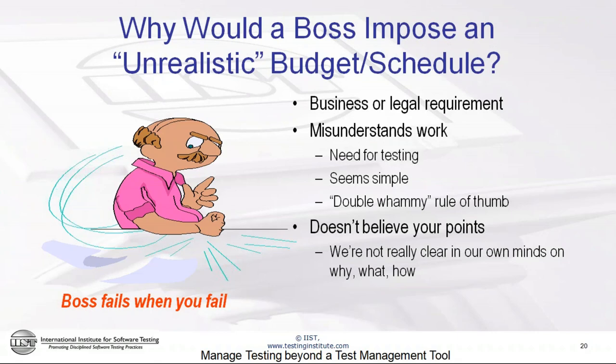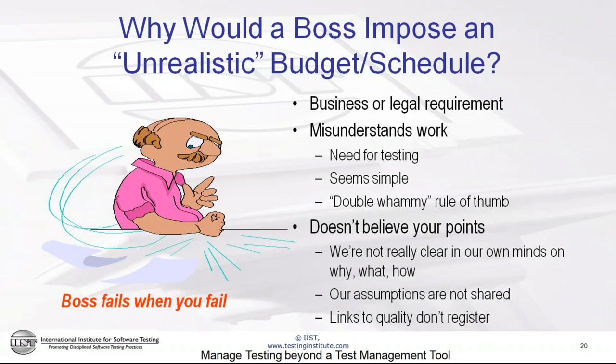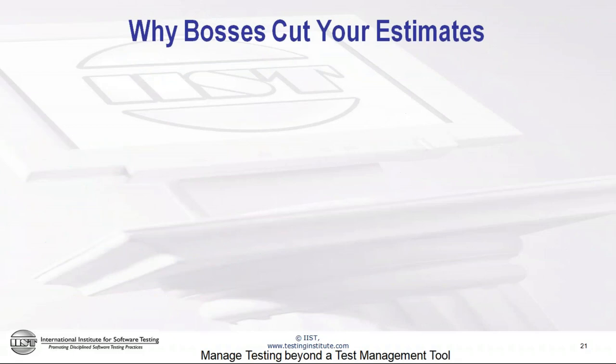If we're just saying things like 'don't you care about quality?' and the boss is not sharing our assumptions, the boss may also say, 'Of course I care about quality, and what you're saying doesn't seem to have anything to do with quality.' We think we're talking about quality and the boss doesn't. In a way we're saying, 'Boss, if you don't do what we tell you, it means you don't care about quality' — and bosses don't buy that very well; it tends to create resistance. There are a variety of reasons why bosses cut our estimates.